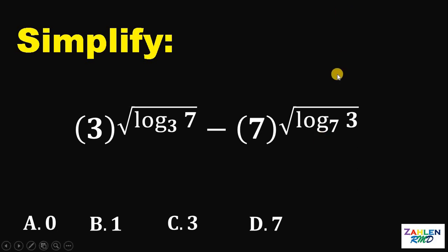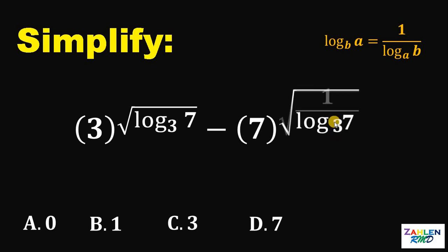One way to answer this question is realize that if we have logarithm of A to the base of B, it is equivalent to 1 over logarithm of B to the base of A. Therefore, this logarithm of 3 to the base of 7 can be written as 1 over logarithm of 7 to the base of 3.